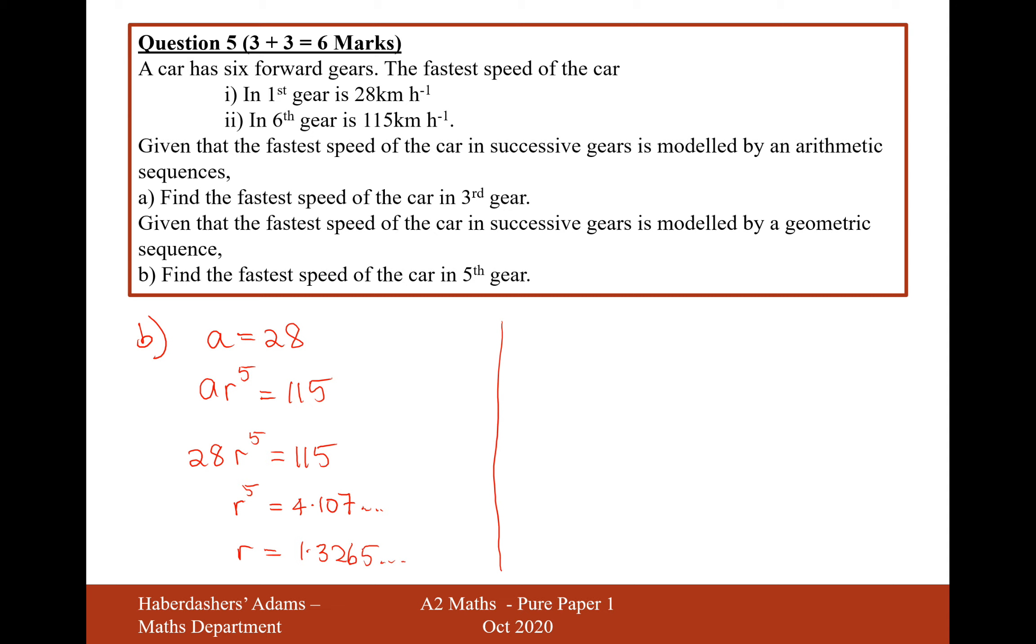So now, let's work out the fastest speed in the fifth gear. That's going to be AR to the power of 4. So 28 times 1.3265 to the power of 4 equals 28 times answer to the power of 4 equals 86.7 km per hour. And there we are, that's the answer for this question. That's question 5, worth 6 marks in total. Let's now move on to question 6.